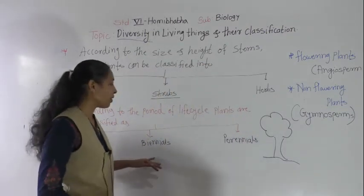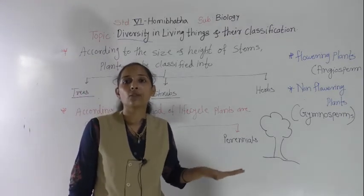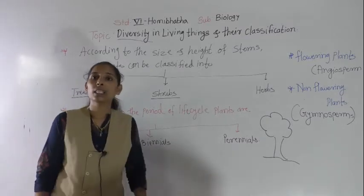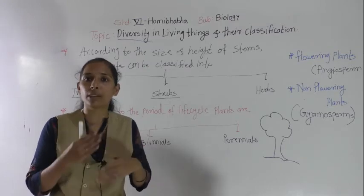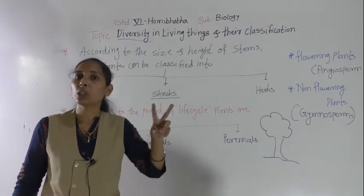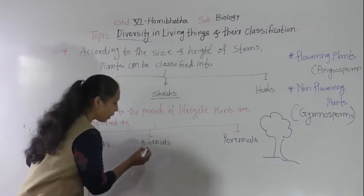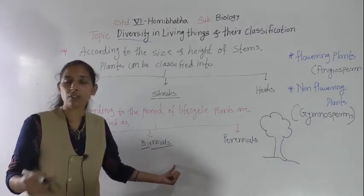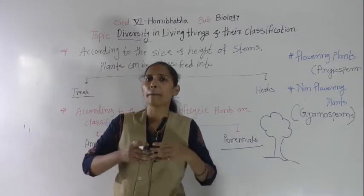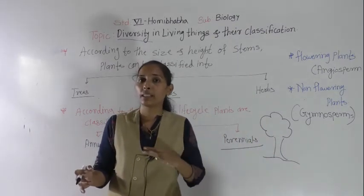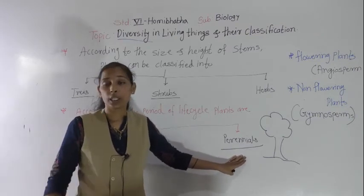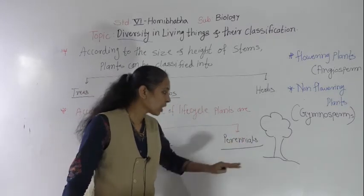The next category is biennials — plants which complete their biological cycle within two years. In biennial plants, in the first year the plant has only vegetative growth, and in the next year the plant has flowering and fruiting, and then it dies. Within two years they complete their life cycle, so they are called biennials. Perennials are plants that survive for many years — we cannot even count — and they can live for the maximum long duration.